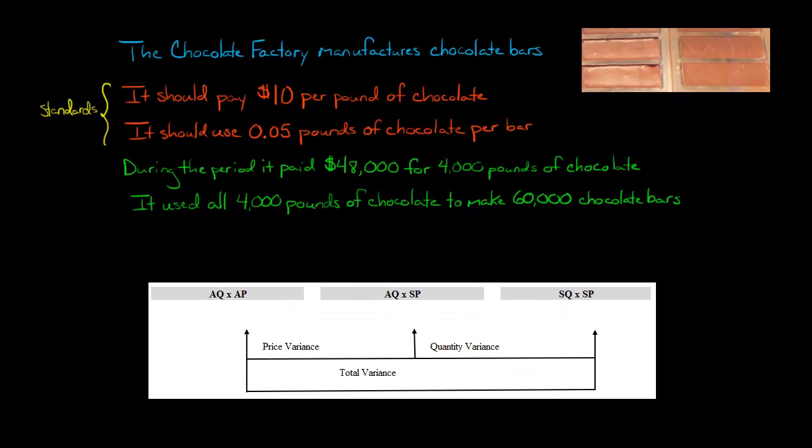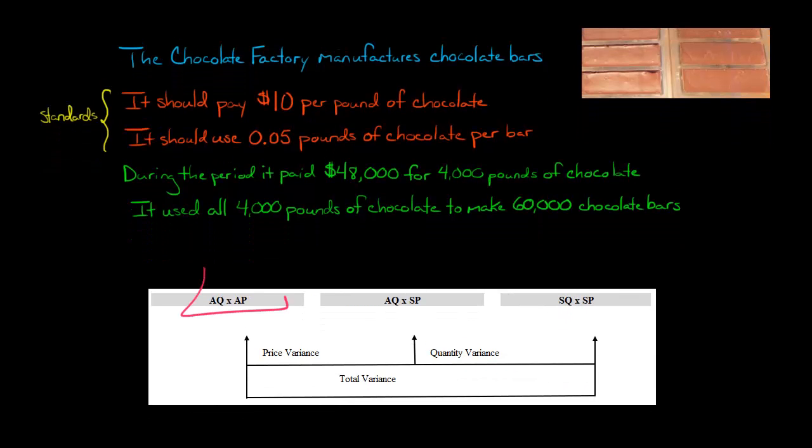I like to set it up like this. Whenever I do variance analysis, I have AQ times AP, which is the actual quantity times the actual price. I set that up on the left. And in the middle, I've got the actual quantity times the standard price. So if we take the difference of these two amounts, that is going to be our price variance.